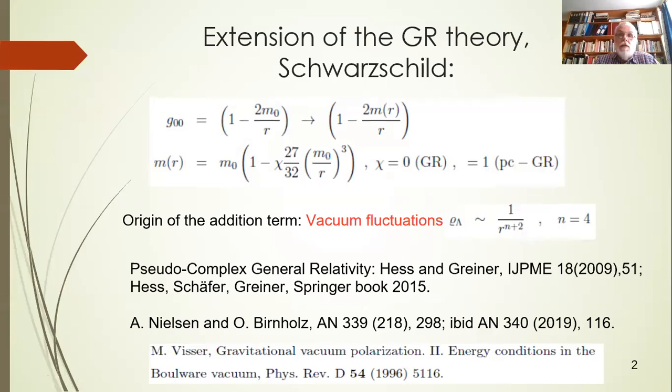The main ingredient is the zero-zero component of the matrix, which is shown here, which has a constant mass for the GR case, and in general this mass will depend on R, especially for the PCGR case. I will use this mass function, where chi for zero is GR and for one is PCGR. This mass function is a consequence of assuming vacuum fluctuations around the black hole.